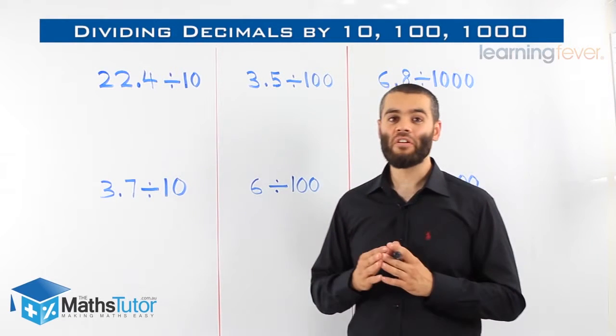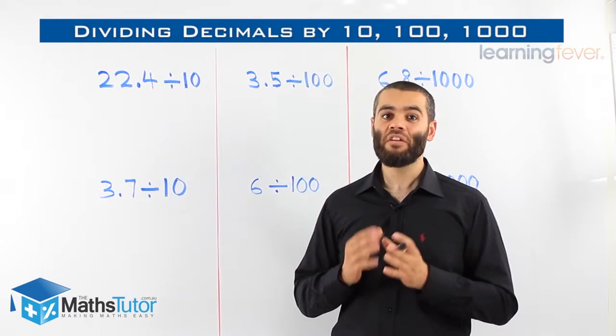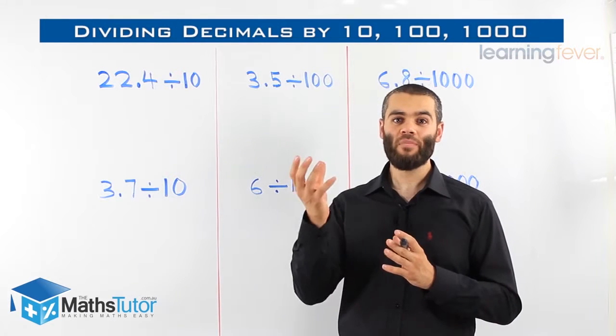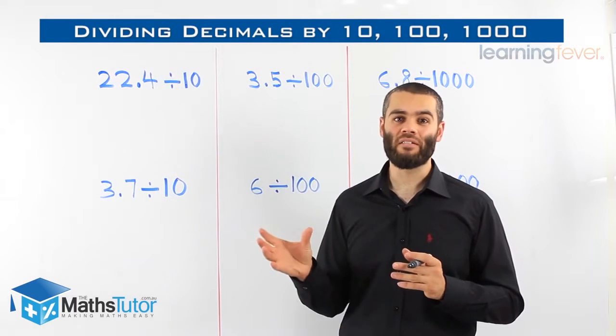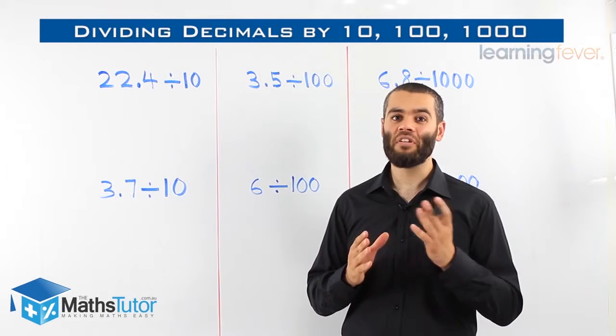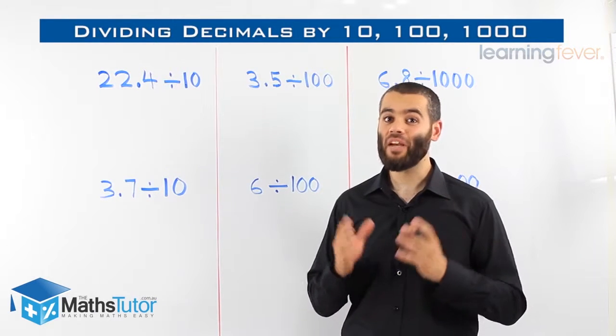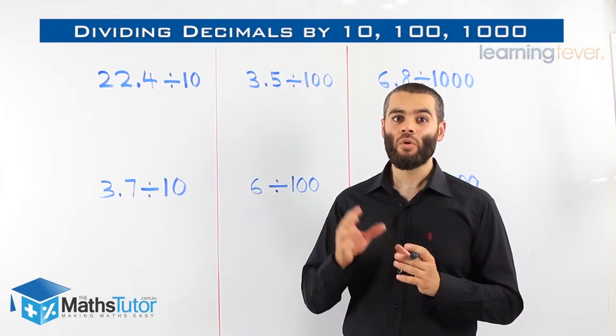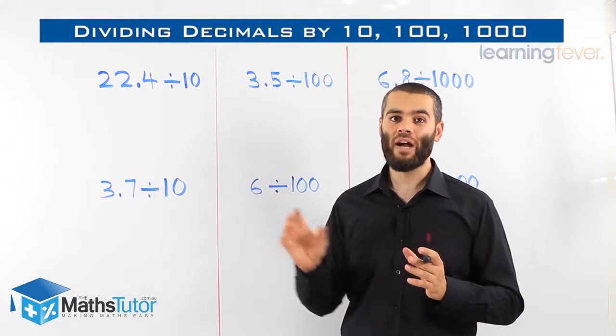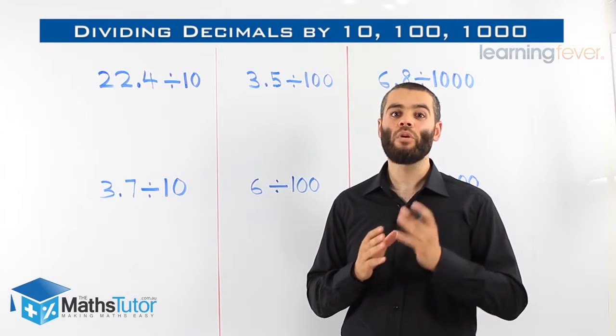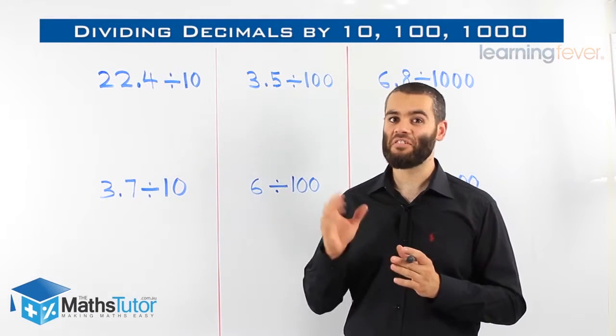What you noticed earlier on when we did the multiplication is that when we multiplied, we grabbed the decimal point and we moved to the right. Now, what is the opposite of times? It's divide. So in multiplication, we move to the right. In division, we move to the left. Let's see how it's done.